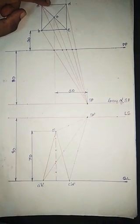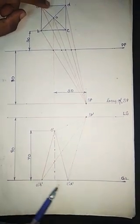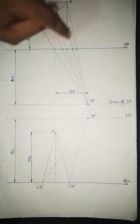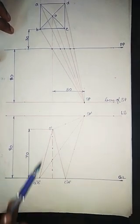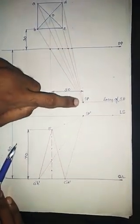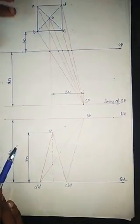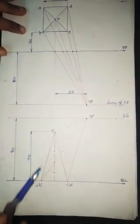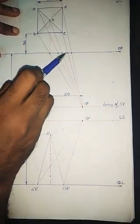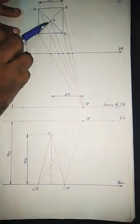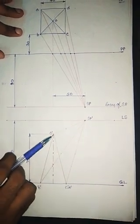As usual, we will be drawing the top view here and projecting all the points to get the front view. In the top view we will have points A, B, C, D, and O. In the front view we will have A dash, B dash, C dash, D dash, and O dash. We identify the position of SP and SP dash, then join all the points in the top view to SP and all the points in the front view to SP dash, making sure O and O dash are also joined.